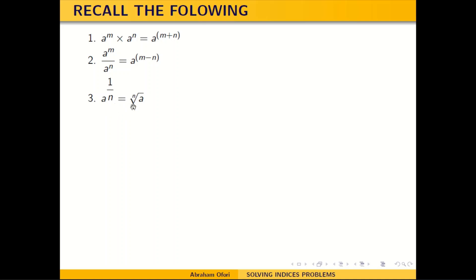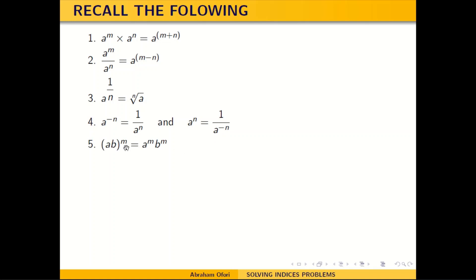For a fractional index, this is how you go about it. If I have a to the negative n, this is how it works. In other words, if I have a to the negative n, or a to the power of something, it's equal to 1 over the negative of that side. So a to the power n is the same as 1 over a to the negative n. This is how it tends to be.